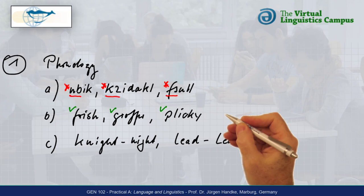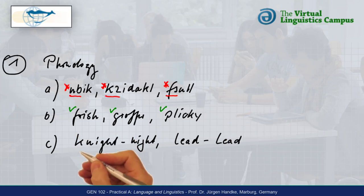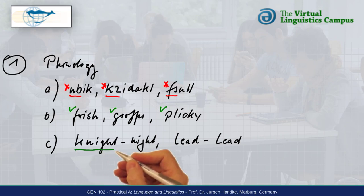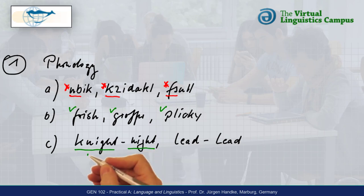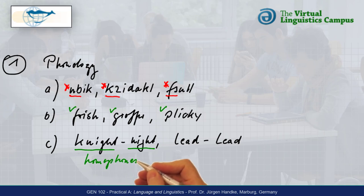Well, in the third set, we have night and night, spelt differently but pronounced identically. They are homophones — that is, words with identical pronunciation but different orthography.